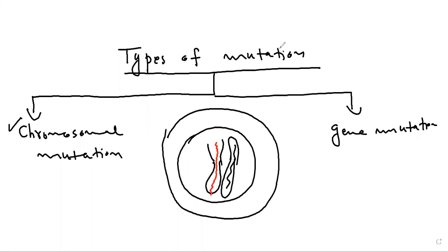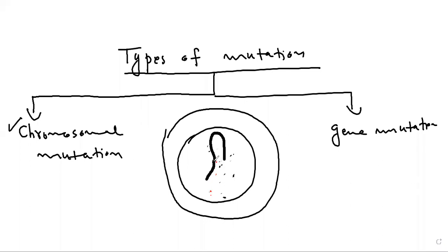The other type is gene mutation. In gene mutation, the chromosome itself is completely intact and correct, but the DNA sequence — the genetic code within the gene — is changed. When the sequence of the genetic code changes, we call that gene mutation.